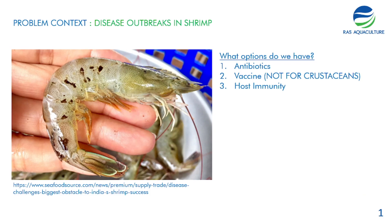To first understand the problems and why we need these prebiotics and probiotics is to overcome disease outbreaks in the farm. This is a picture I got from Seafood Source — you can click on the link and look at the article. It shows that diseases are the biggest obstacles in the shrimp business.